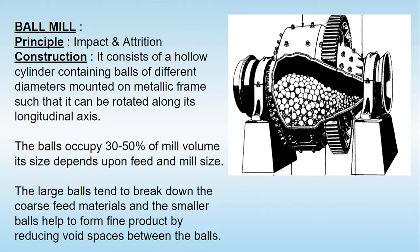Now let's understand the construction — how the ball mill is made. Basically, the ball mill consists of a hollow cylinder in which balls of different diameters are used. This entire hollow cylinder, as shown in the figure, is mounted on its longitudinal axis and rotated. The balls occupy 30 to 50 percent of the entire volume of the cylinder, and the size of the balls generally depends upon the material undergoing size reduction and the size of the mill.